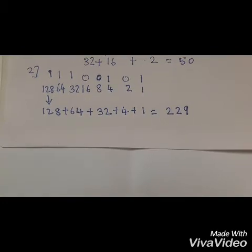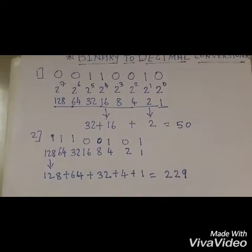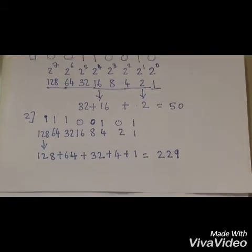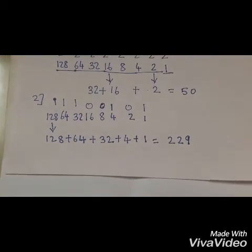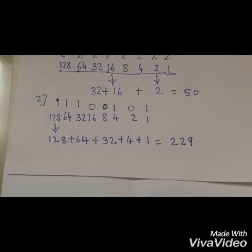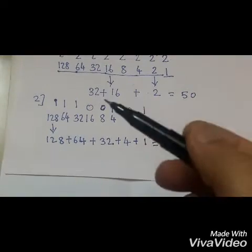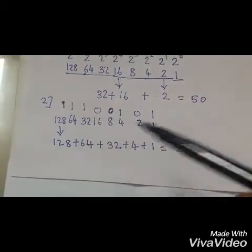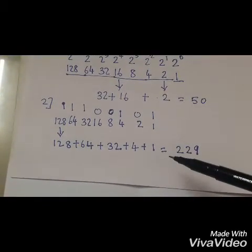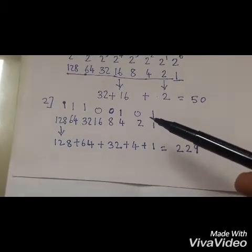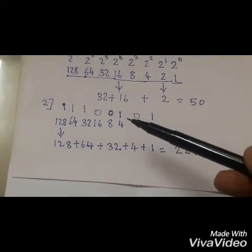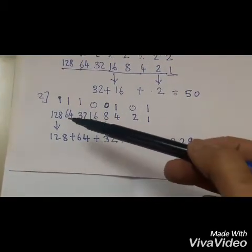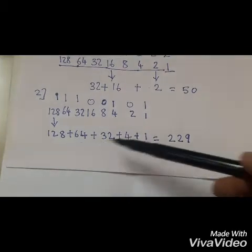The second example: the binary number is 1 1 1 0 0 1 0 1. As explained before, we write the weights as 1, 2, 4, 8, 16, 32, 64, 128 in their respective places. Wherever there is a 1, we bring that number down and add them. In this case, the values are: 1 at the ones position, 4 at the fours position, then 32, then 64, then 128.